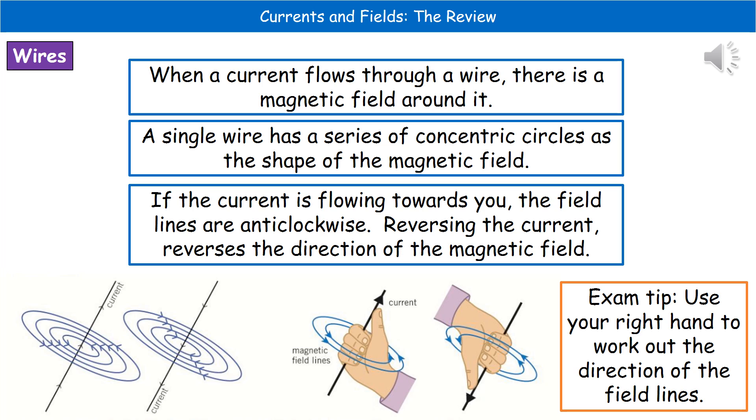One thing we need to be able to work out is the direction of that particular field generated by the current. The way we do that is by using our right hand, as shown by the pictures in the middle. If you make your thumb up, like you're about to hitch a lift somewhere, your thumb points in the direction the current is traveling in, and your fingers, the way they curl round, tell you the direction the magnetic field lines travel in.